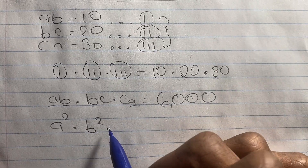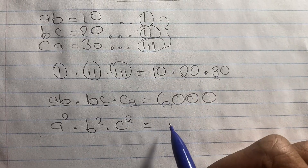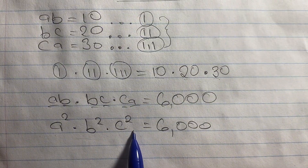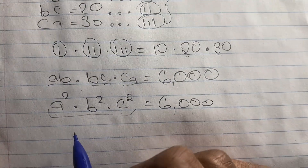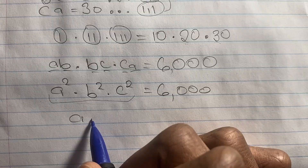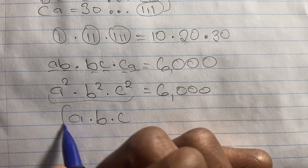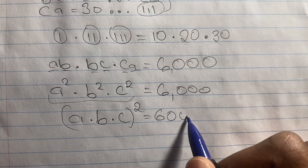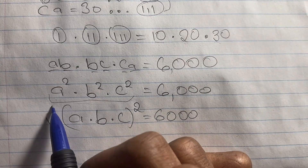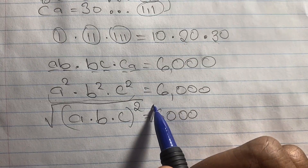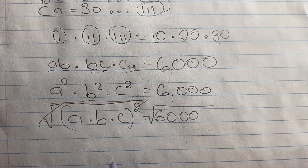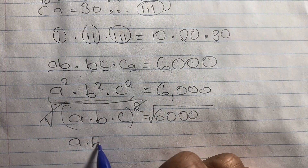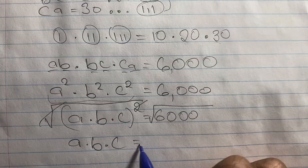So this means we now have a squared times b squared times c squared equals 6000. Since we are squaring all our variables, we can simplify this expression. We write a times b times c in brackets and square that, which is equal to 6000. We can then apply the square root on both sides to get rid of the square, so a times b times c equals the square root of 6000.